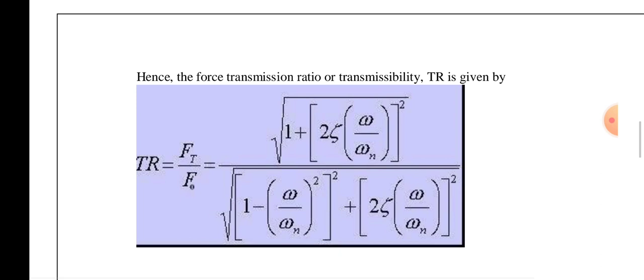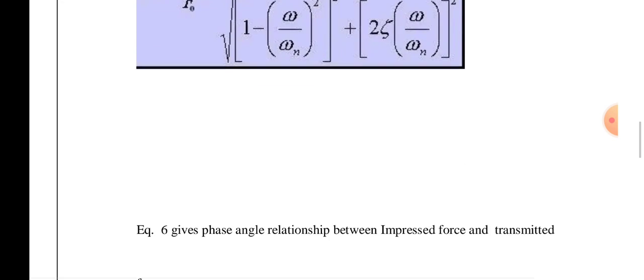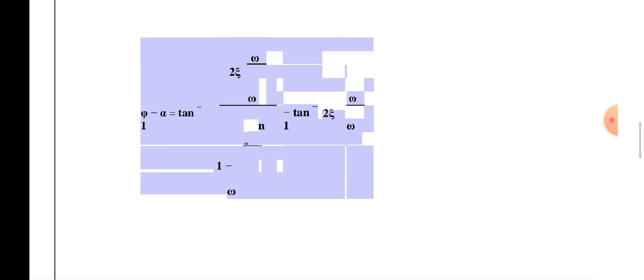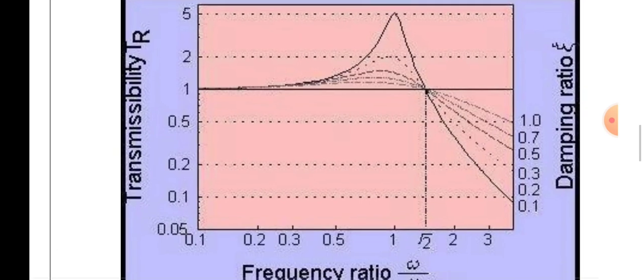This gives a phase angle relation between the impressed force and the transmitted force: φ − α = tan⁻¹[2ζ(ω/ωₙ) / (1 − 2ζ(ω/ωₙ))]. Now we look at the transmissibility versus frequency ratio graph, where the x-axis is the frequency ratio ω/ωₙ and the y-axis is the transmissibility ratio TR.